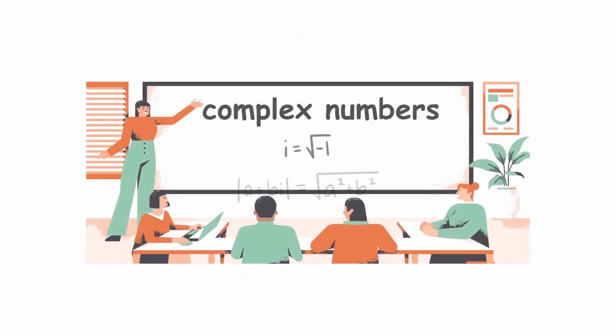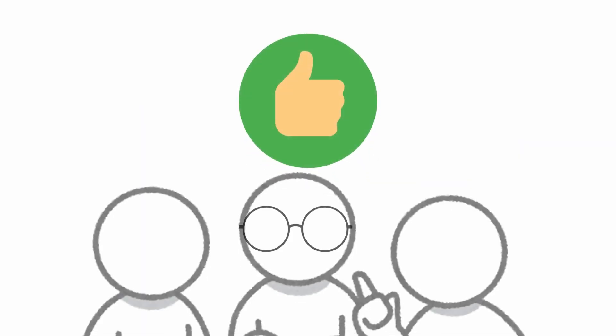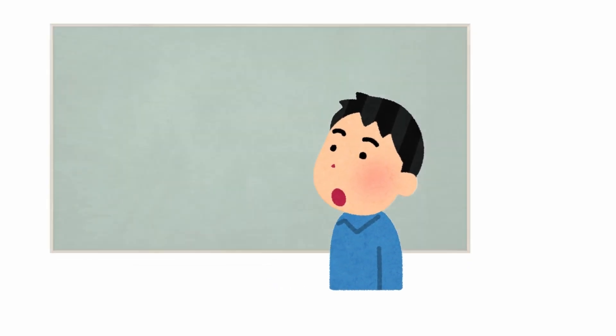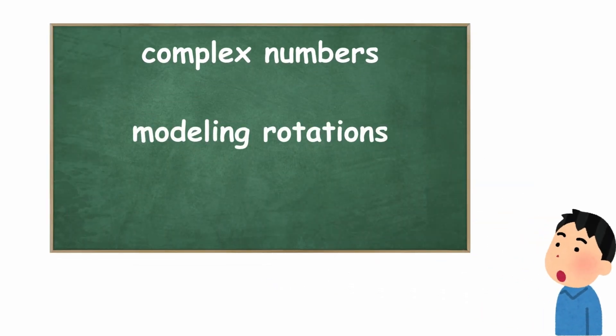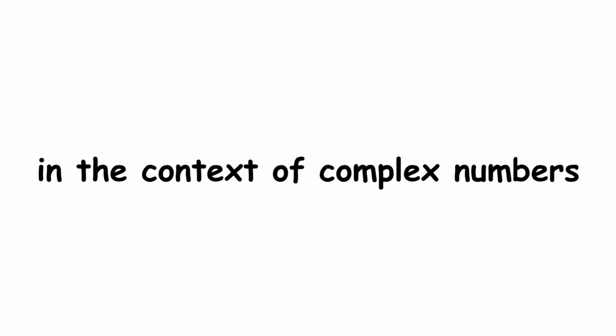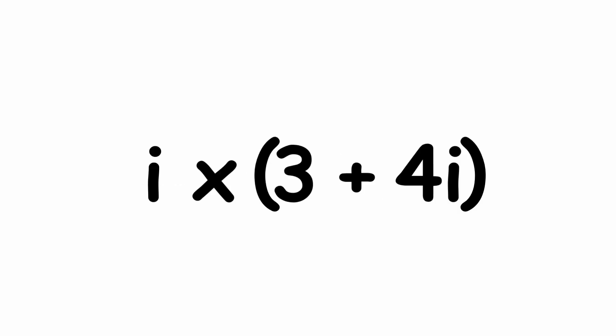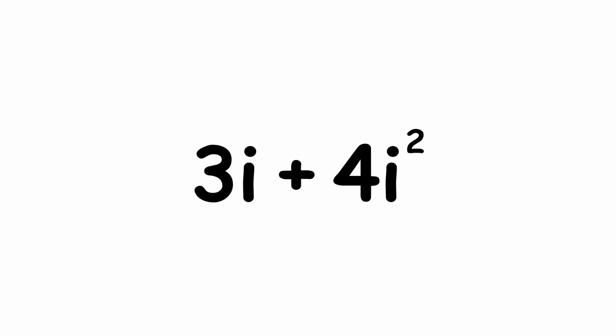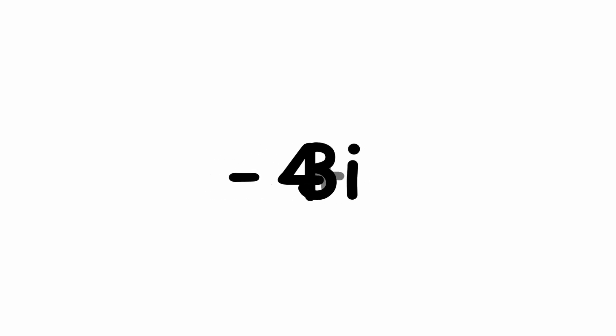Despite their rocky start, complex numbers ended up being widely accepted as extremely useful. Let's end by looking at one of the most useful things you can do with complex numbers: modeling rotations. We'll start by observing what happens when you multiply a complex number by 1 — anything times 1 is itself, so 1 is called unity. Next, let's try multiplying by i. What is i times (3 + 4i)? Algebraically: i(3 + 4i) = 3i + 4i² = 3i − 4 = −4 + 3i.